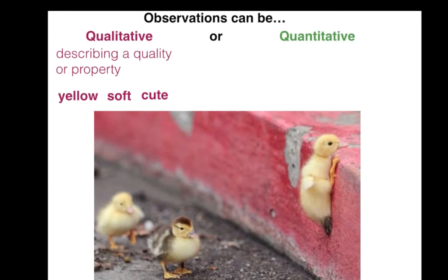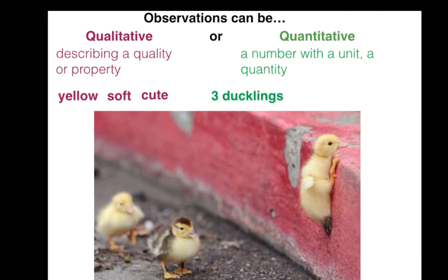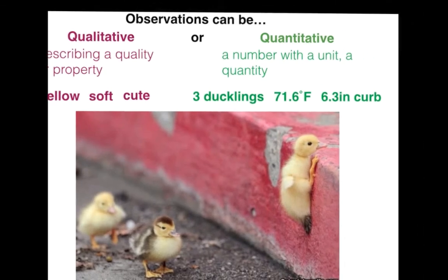Whereas quantitative observations are things you measure — there is a number with a unit. Quantity has a number, and units are critically important, and you'll be reminded of that over and over as the year goes on. So here we have things like three ducklings, a temperature of 71.6 degrees Fahrenheit, and a curb that is 6.3 inches. All of those are quantitative observations because they're a number and a unit.